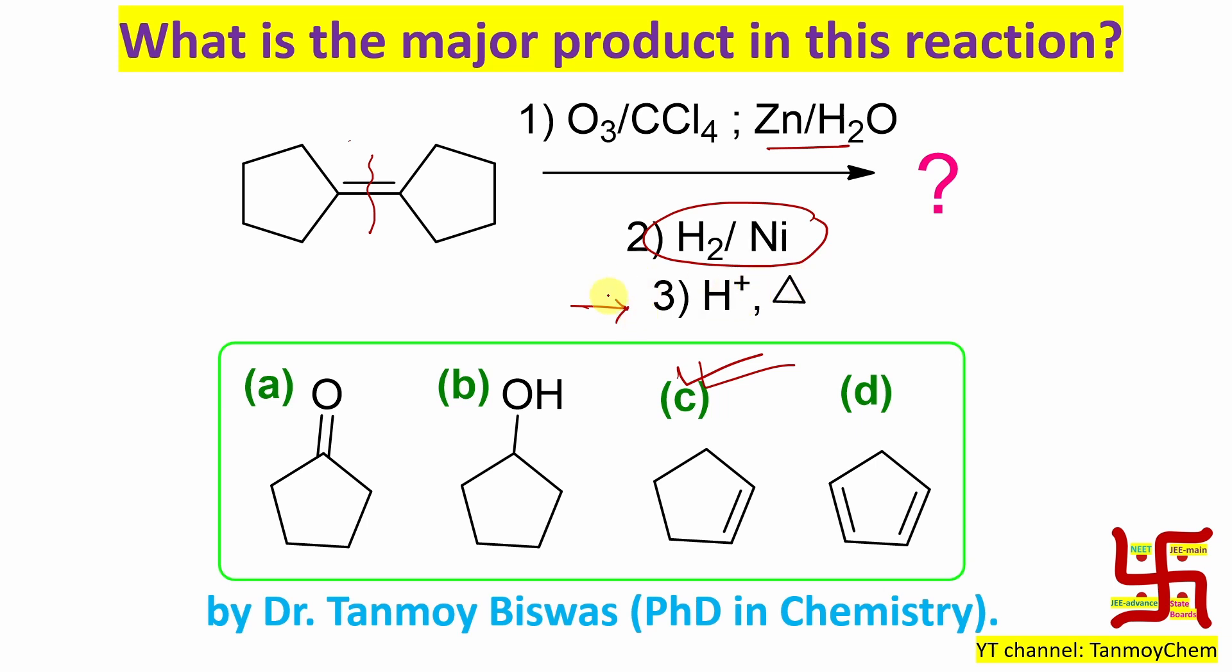And the third step, H+ and heat. So alcohol, acid, heat, product is alkene. So alcohol - this is not possible. Ketone - not possible. Now confusion will be C versus D: alkene or diene. So obviously it is alkene because only one OH is there. Now just imagine you are a little confused. How can you go further?